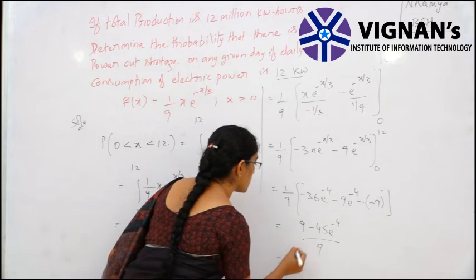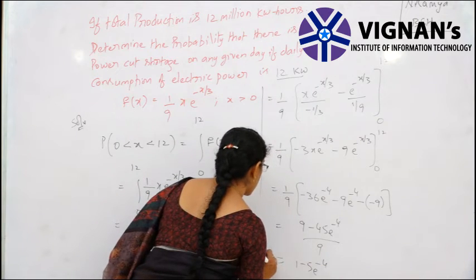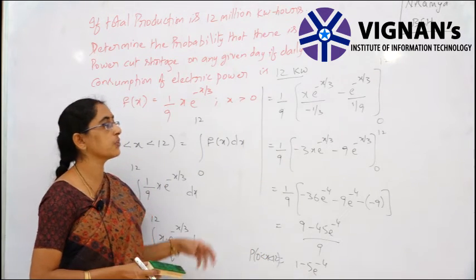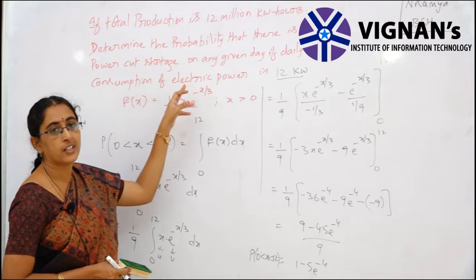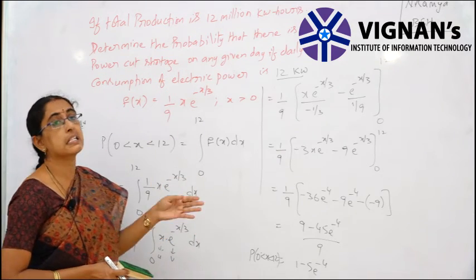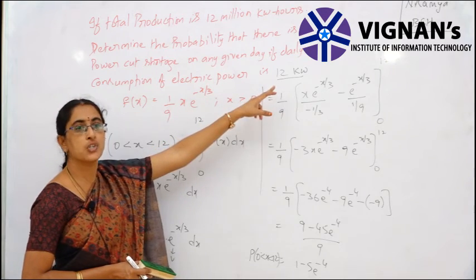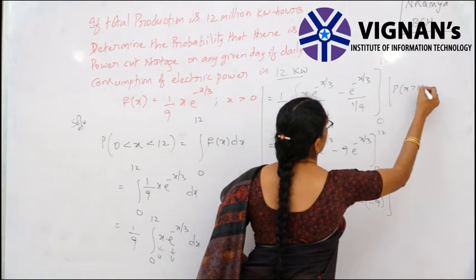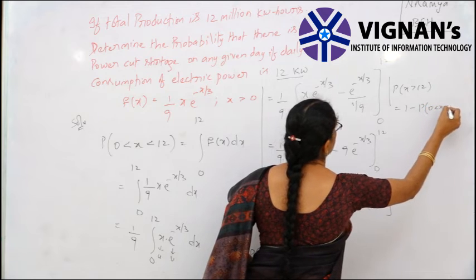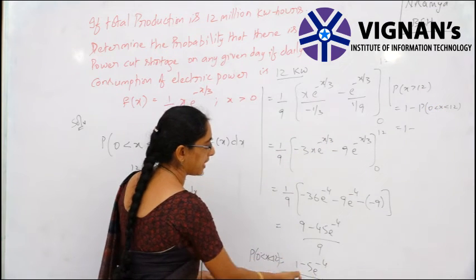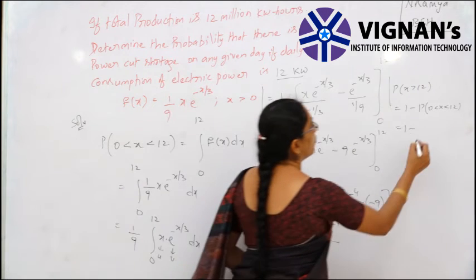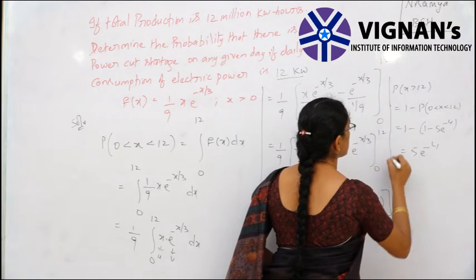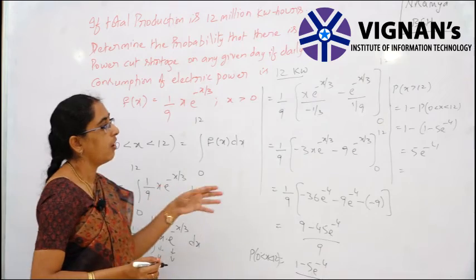Applying the limits: at x=12, −36·e^(-4) − 9·e^(-4); at x=0, 0 − 9·e^0 = −9. So (1/9)·[(−36e^(-4) − 9e^(-4)) − (−9)] = (1/9)·[9 − 45e^(-4)] = 1 − 5e^(-4). Therefore P(X > 12) = 1 − P(0 < X < 12) = 1 − (1 − 5e^(-4)) = 5e^(-4).